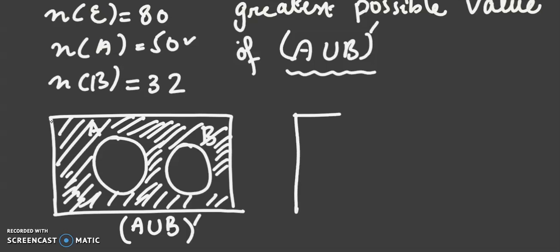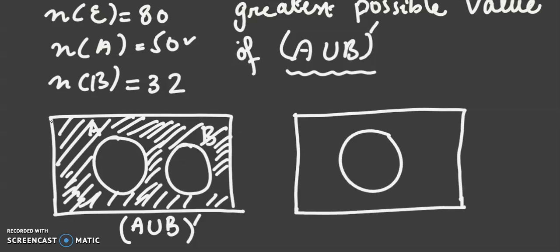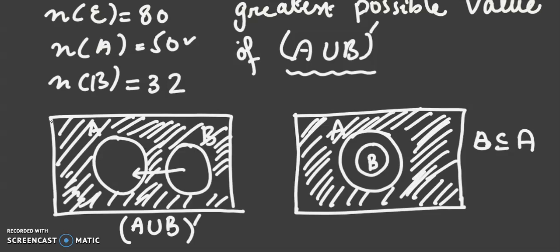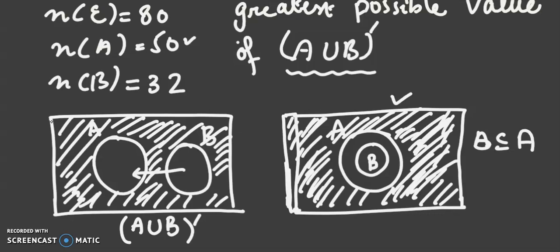And how can we make this shaded area maximum? Let's have a look. If this is set A and the set B becomes the proper subset of set A, then the shaded area becomes maximum. I can make it a little bit larger this set, so that both sets are equal. Now you can see that shaded area is maximum in this Venn diagram because B has become the proper subset of A.